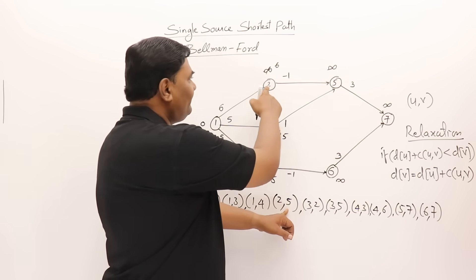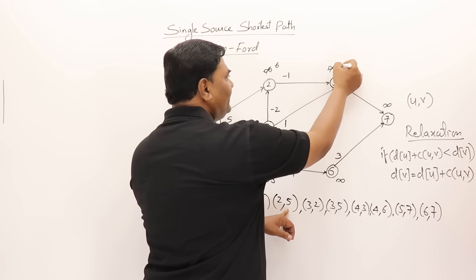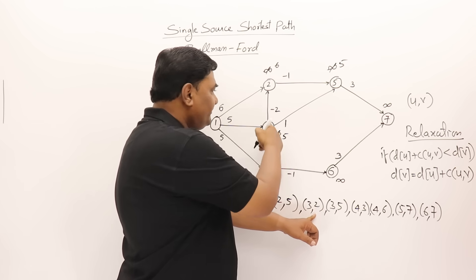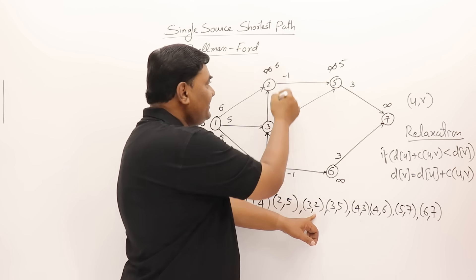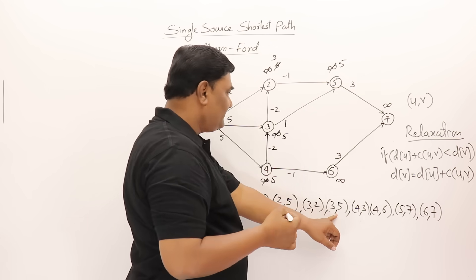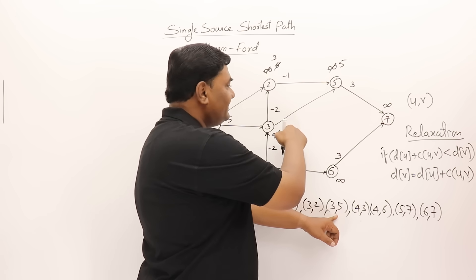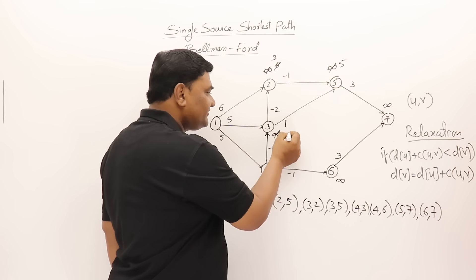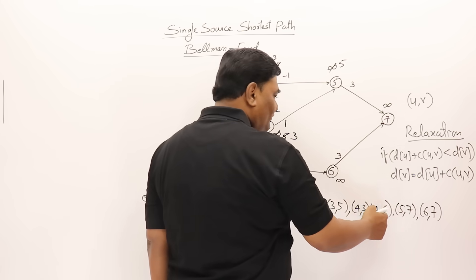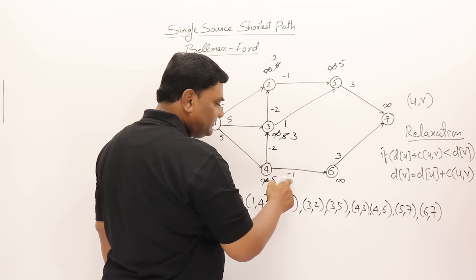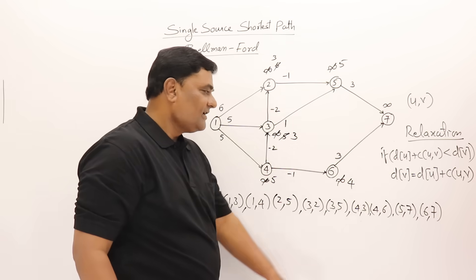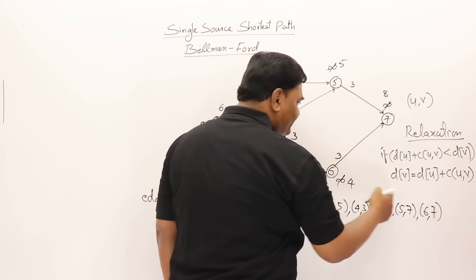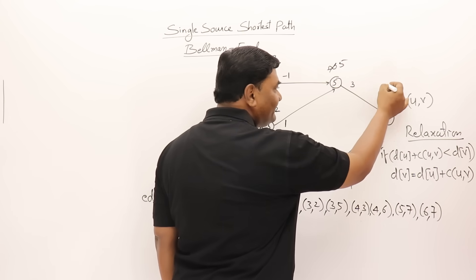Edge (2,5): six minus one is five, so vertex 5 becomes five. Edge (3,2): five minus two is three, so vertex 2 changes to three. Edge (3,5): five plus one is six, but vertex 5 is already five — that's smaller, so no change. Edge (4,3): five minus two is three, so vertex 3 becomes three. Edge (4,6): five minus one is four, vertex 6 changes to four. Edge (5,7): five plus three is eight, vertex 7 changes to eight. Edge (6,7): four plus three is seven, which is less than eight, so vertex 7 changes to seven.